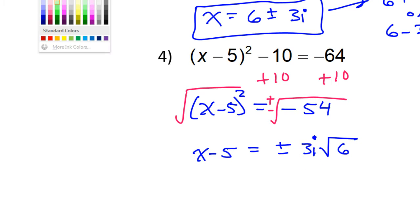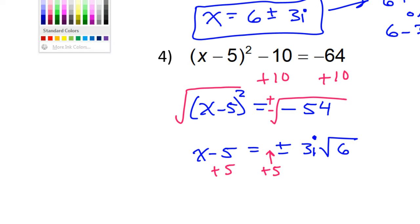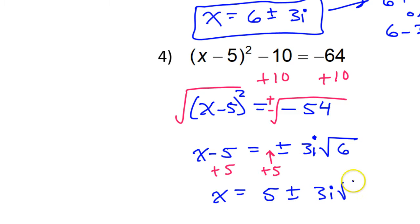We're not done — we still need to add 5 to both sides and put it in the front. So we'll have x is equal to 5 plus or minus 3i radical 6.